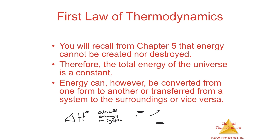Delta H equals H of products minus H of reactants, and it's either positive or negative. If the products have a value of 3 and the reactants have 7, then 3 minus 7 gives a negative number. So in the case of an exothermic reaction, delta H is negative. In the case of an endothermic reaction, where there's more energy in the products and less in the reactants, you have a positive delta H.